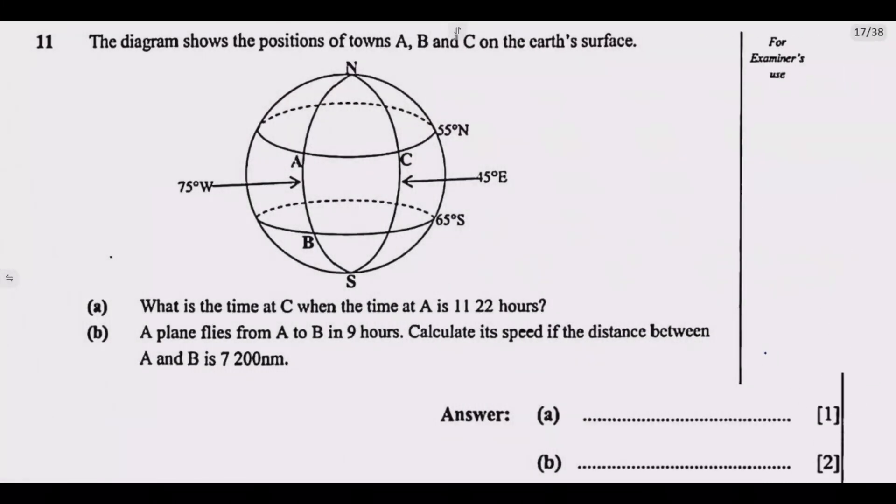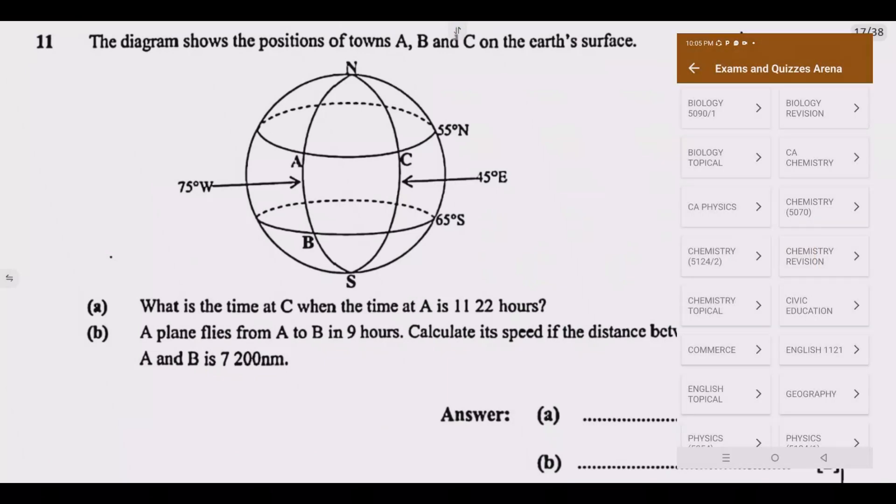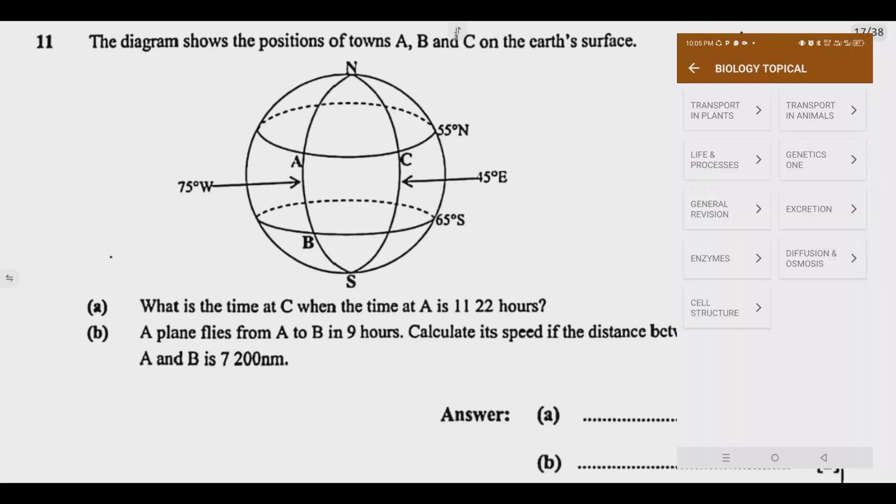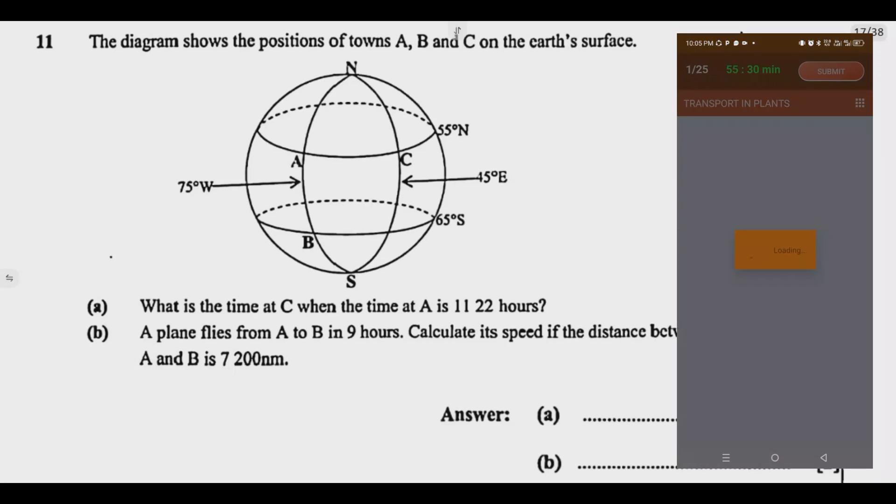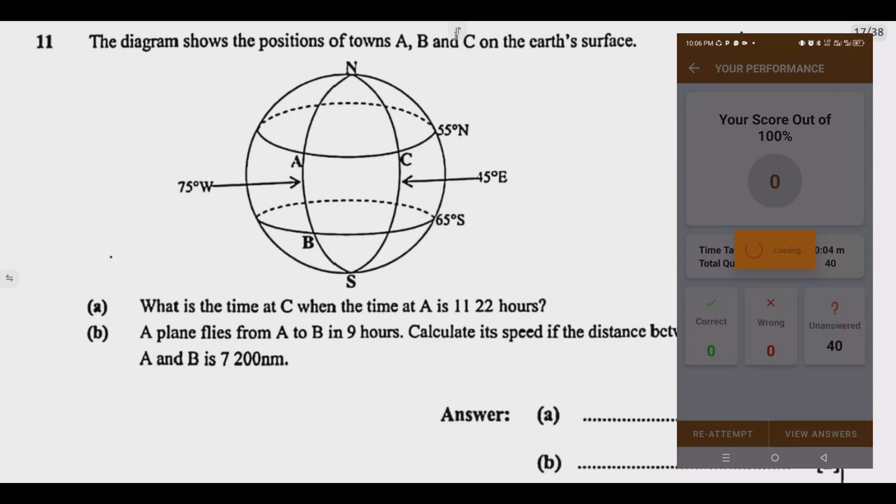Let us look at question 11. The diagram shows the positions of towns A, B, and C on the earth's surface. We've seen the earth. Then question A: what is the time at C when the time at A is 11:22 hours?